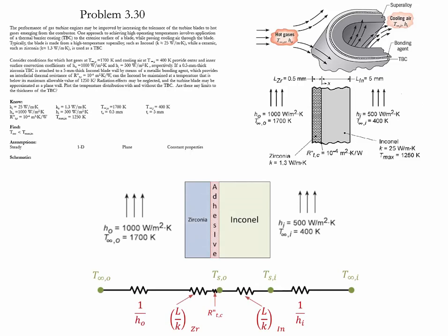We start the analysis by representing the problem using thermal resistances. The first resistance is a convection resistance due to the hot gases outside of the blade. The second resistance is a conduction resistance that goes across the zirconia which is the thermal barrier coating in the problem.